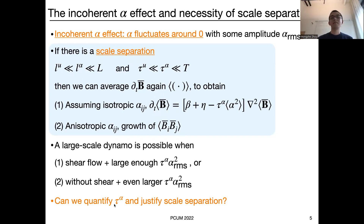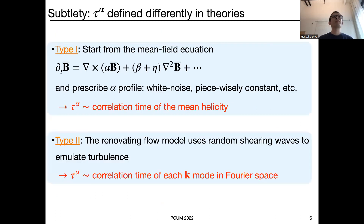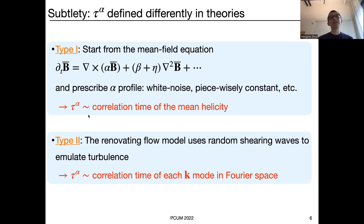To derive those equations we really need scale separation between the alpha fluctuation and the velocity fluctuation. The question is whether we see this kind of scale separation in simulations, and can we quantify this alpha timescale? Alpha is a turbulent coefficient, and only through closure models can we connect it to the helicity. The definition of tau_alpha will be subtly different between different theories.